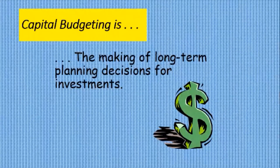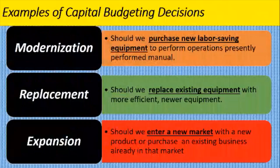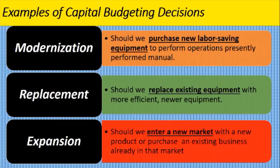A simple definition of capital budgeting is the making of long-term planning decisions for investments. We have examples of capital budgeting decisions — we have three here, but there are much more than that.